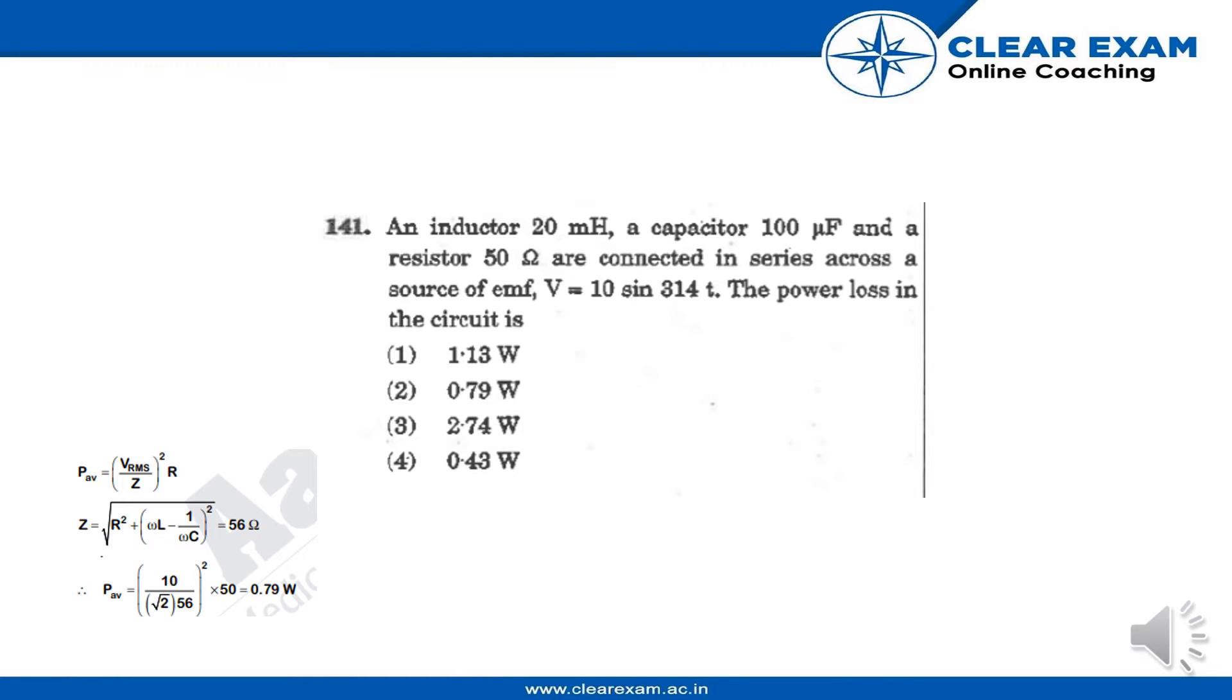An inductor of 20 mH, a capacitor of 100 μF, and a resistor of 250 Ω are connected in series across a source of emf with voltage V = 10 sin 314t. The power loss in the circuit is...